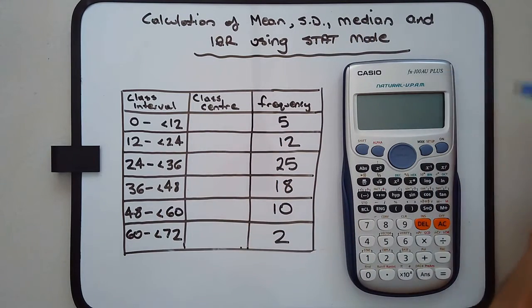I'm going to be doing this on an FX100 AU+, but it's very similar to the FX82 AU+ and other related Casio calculators. The menu options might be slightly different, but it's basically the same idea in terms of using the stat mode.